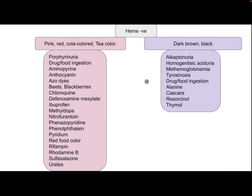If the urine is dark brown or black, the differential diagnosis may include alkaptonuria, homogentisic aciduria, methemoglobinemia, tyrosinosis, or drug and food ingestion such as alanine, cascara, resorcinol, and thymol.